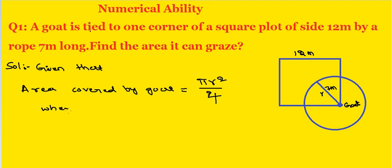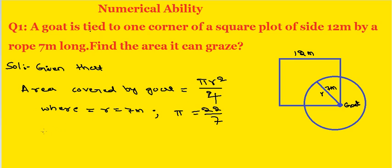Where r equals 7 meters and pi equals 22 by 7. Therefore, area equals 22 by 7 into 7 into 7 by 4.